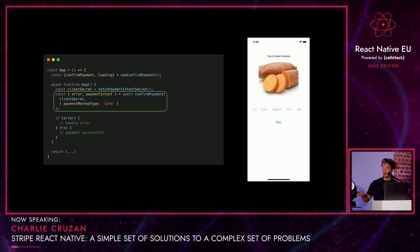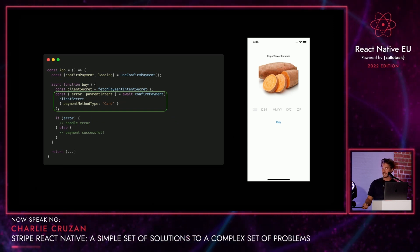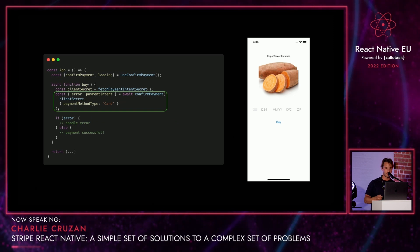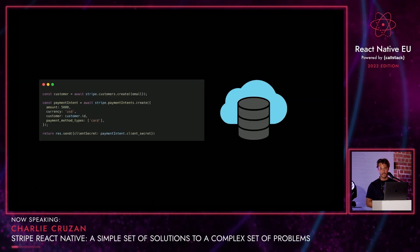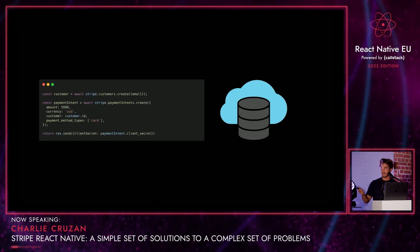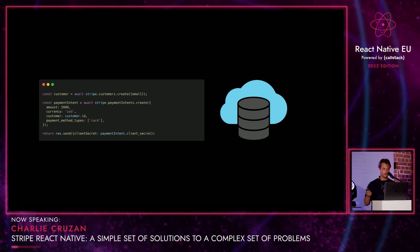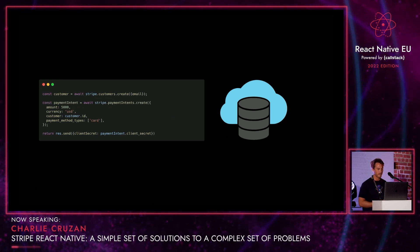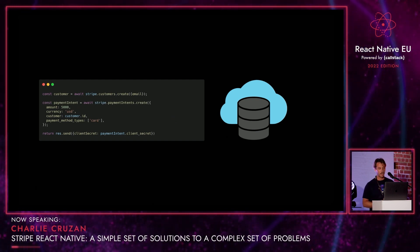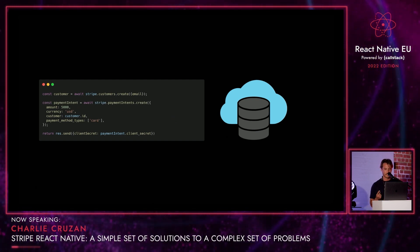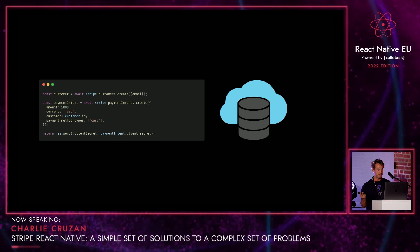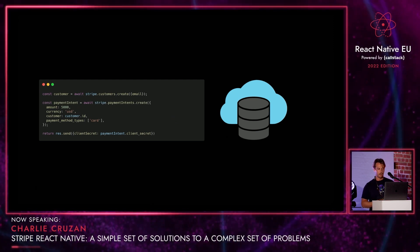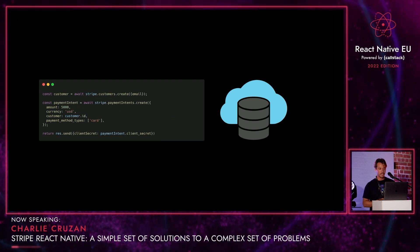To prove I'm not hiding a bunch of work in that fetch payment intent secret — that you'd have to do on the back end — this is all of the server code you would need. You're essentially using Stripe's Node SDK. It's like five lines of code. Create a customer, create that payment intent for 50 USD, and send that back. Super easy.